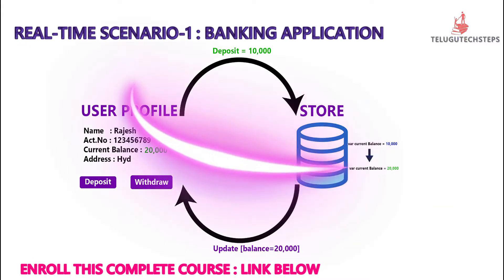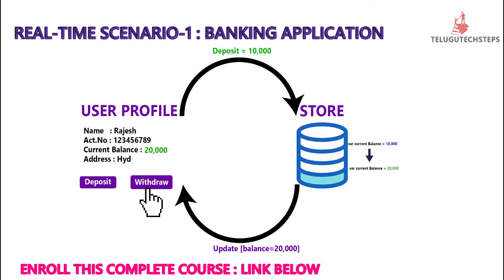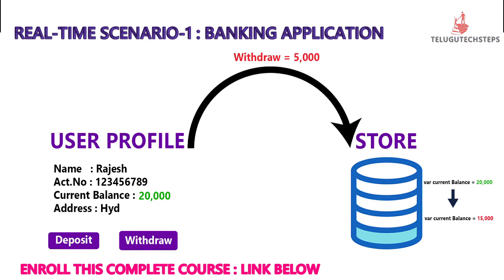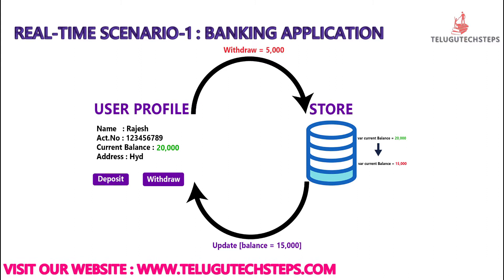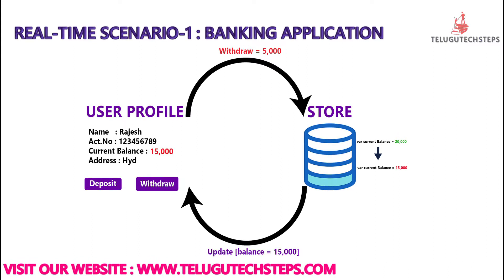For example, if you want to update the user profile with 20,000 or 5,000, it will update that particular component. This is the user profile — it will update the particular component. This is a simple scenario. The complex structure is nothing but a greater number of components and functionality.